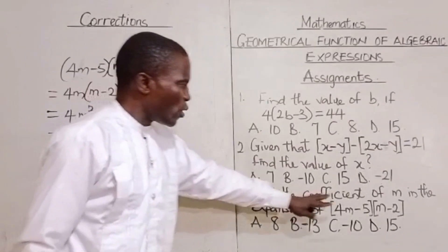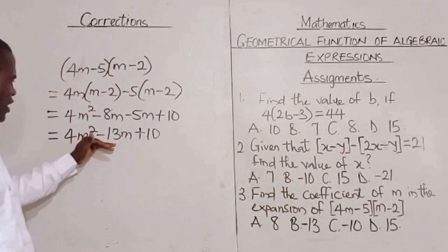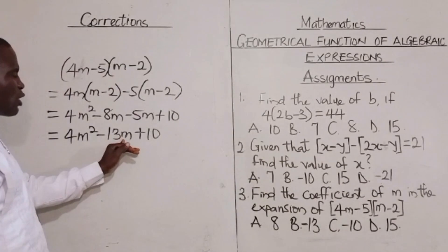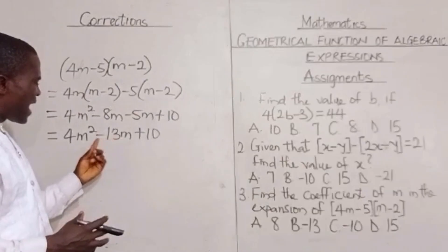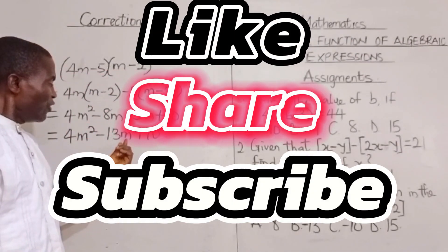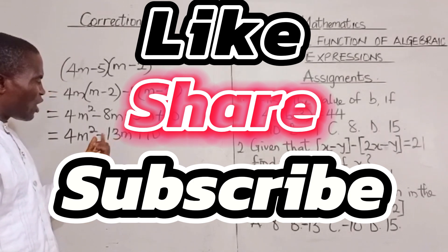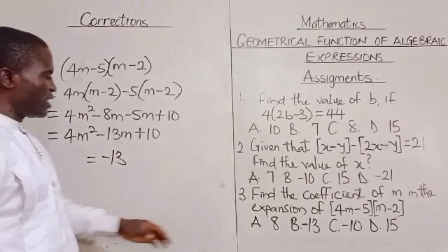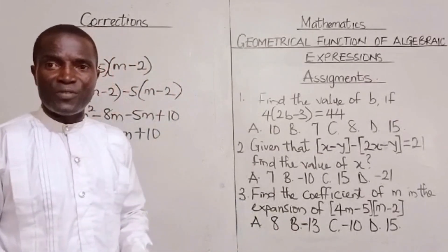The question says, find the coefficient of m in the expansion of this. This is the expansion of this. Then what is the coefficient of m? Coefficient is number and sign that occupy the front of a given letter. So the given letter is m. So the number is this. The sign is this. So the coefficient of m now becomes minus 13. So let's check the correct option. The correct option is option D. I want to believe this is very clear.